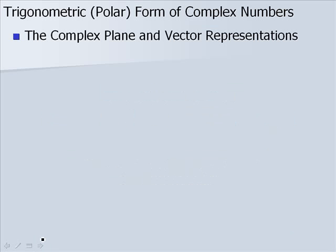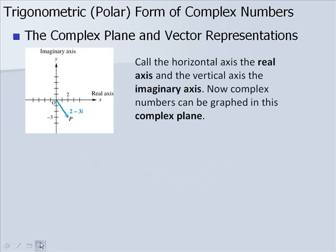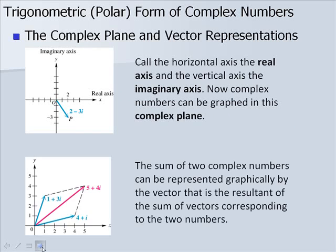We're going to look at the complex plane and vector representations. We'll call the horizontal axis the real axis and the vertical axis the imaginary axis. Complex numbers can be graphed in this complex plane. The sum of two complex numbers can be represented graphically by the vector that is the resultant of the sum of vectors corresponding to the two numbers.